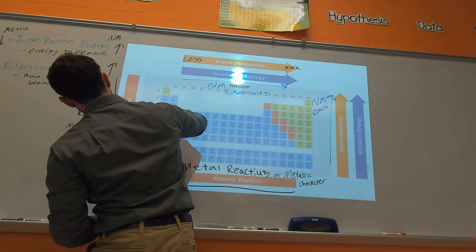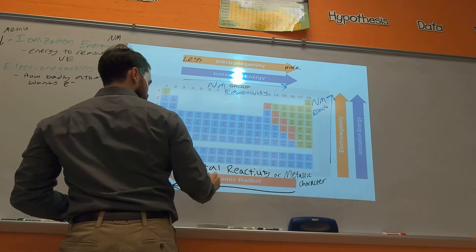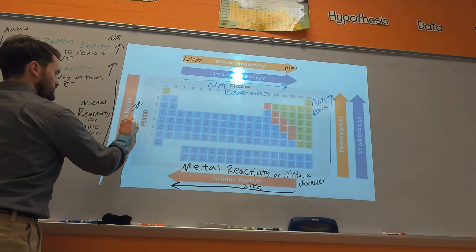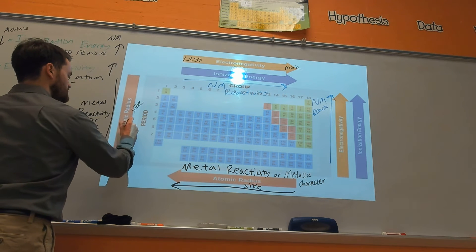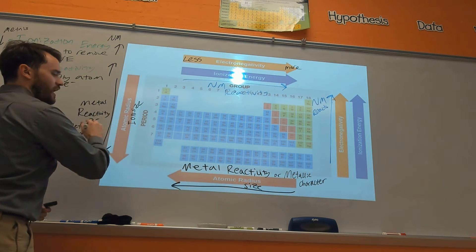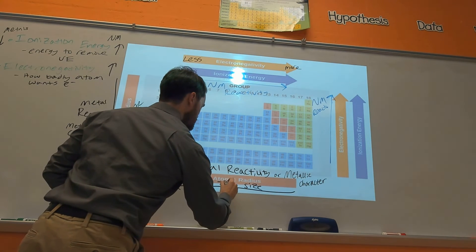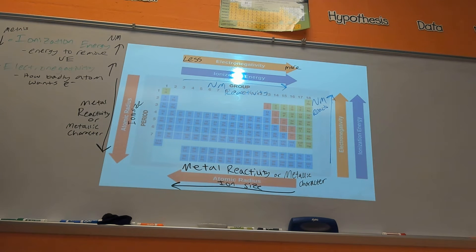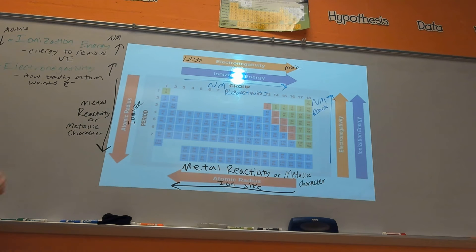Atomic radius is the same thing as size — you'll also see it written as ion size. Basically, how big is the atom? Atoms get bigger as you go down the groups, and the further to the left you are, the bigger the atom will be.